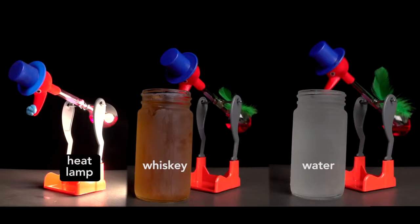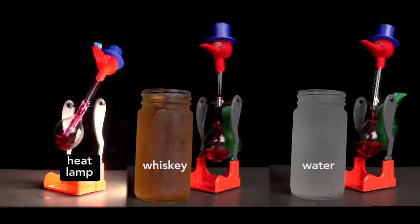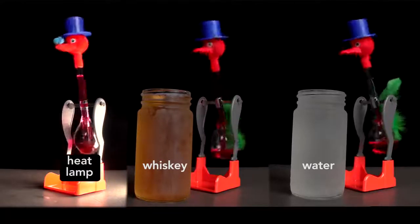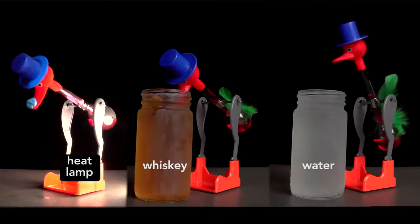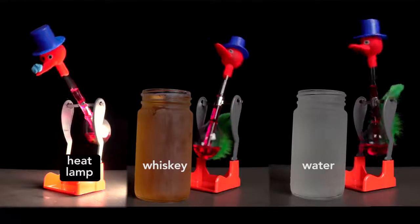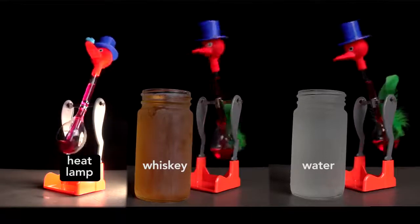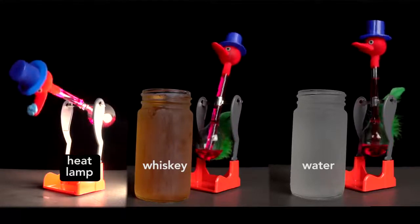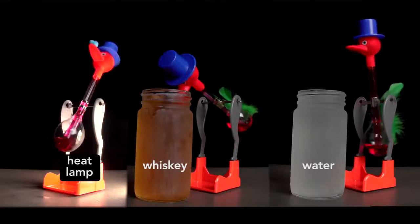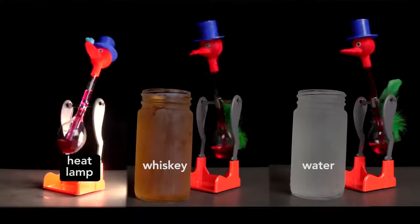We can also now understand why the bird's rate of drinking differs among the three methods I used to activate the bird—a heat lamp, whiskey, and water. Roughly, the heat bird takes three drinks for every one of the water bird. The whiskey bird takes two for every drink of the water bird. The reason the bird drinks whiskey faster than water is because the rate of evaporation of the alcohol is greater than that of water. This means that heat is withdrawn faster from the head, and so more vapor condenses in a shorter amount of time, which accelerates the pressure difference. The heat lamp causes the greatest difference of all, which highlights how an engineer thinks about this bird.